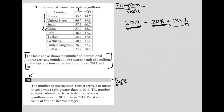The number of international tourist arrivals in Russia was K million more in 2012 than in 2011. So the 2012 number minus the 2011 number is going to give me a K value. The question asks what is the value of K to the nearest integer — we're trying to figure out what K is.